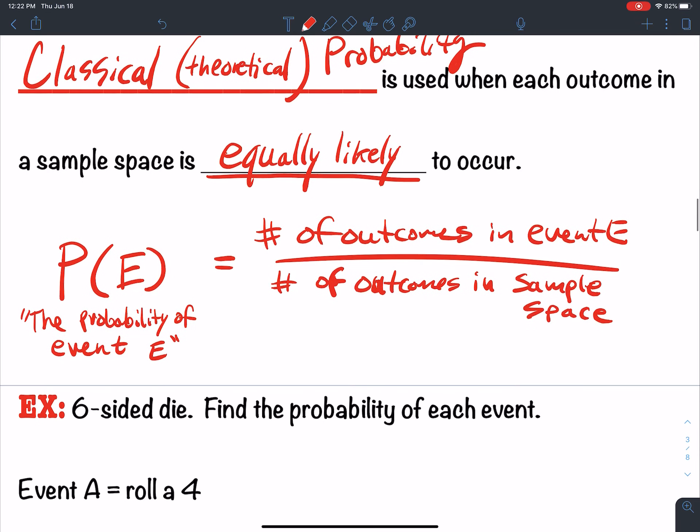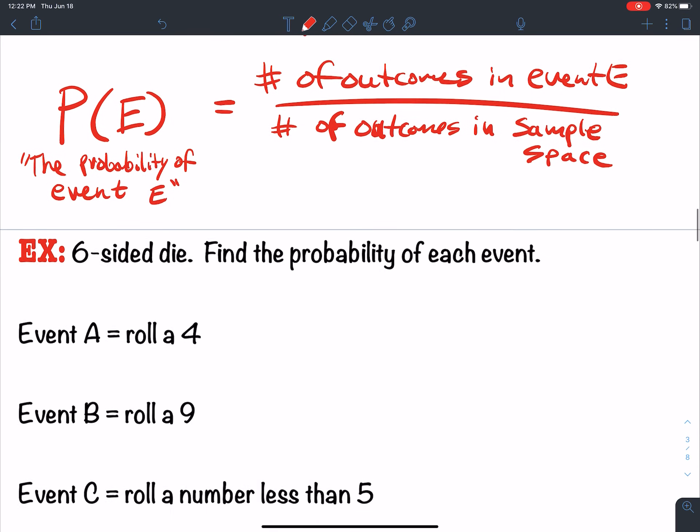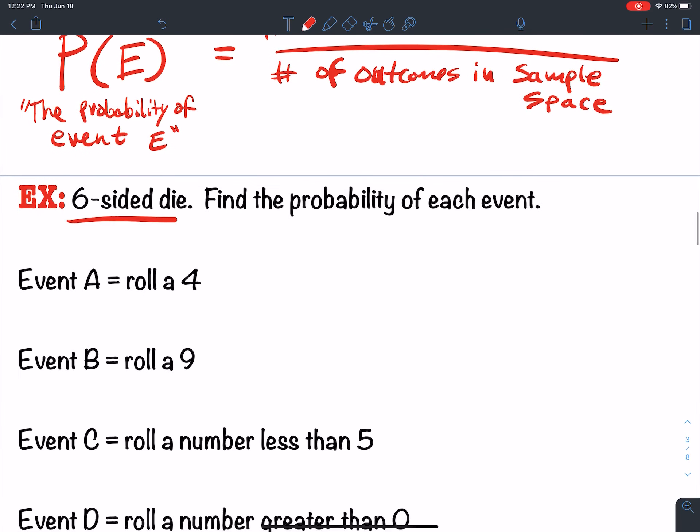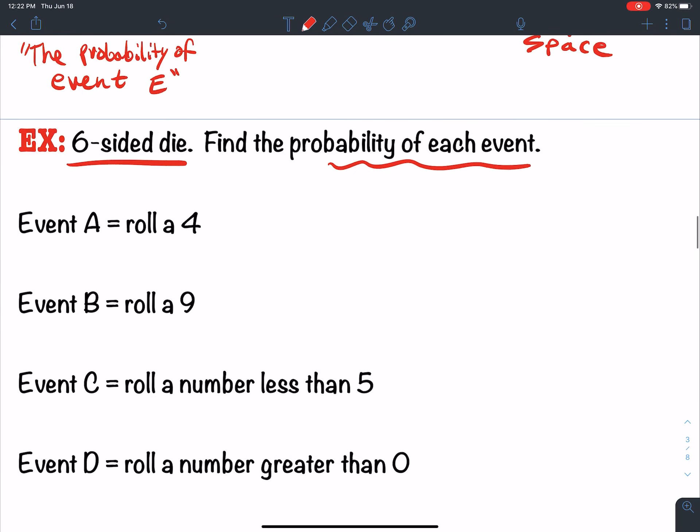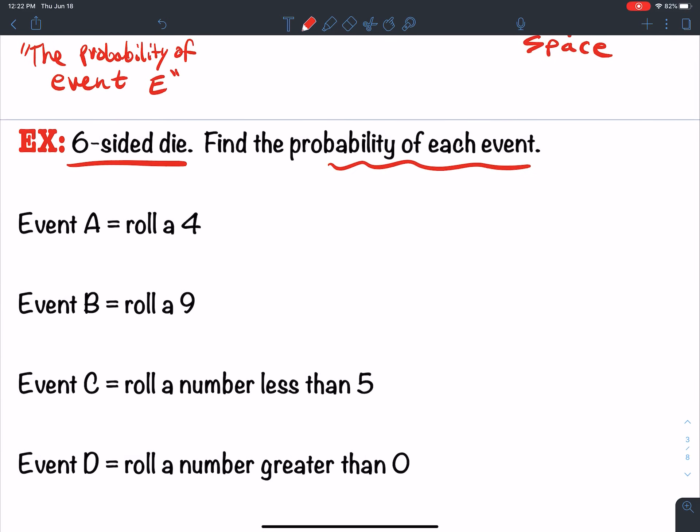An example of theoretical or classical probability. Say we take a six-sided die, and I want to find the probability of each event. The first thing I like to do when I have this type of problem is I like to write out the sample space. For a six-sided die, we have one, two, three, four, five, and six are the possible scenarios.